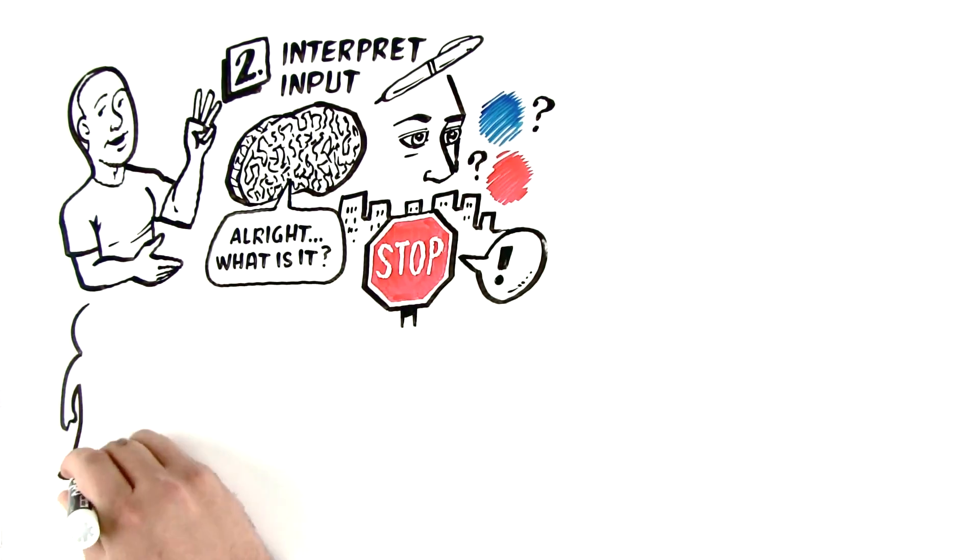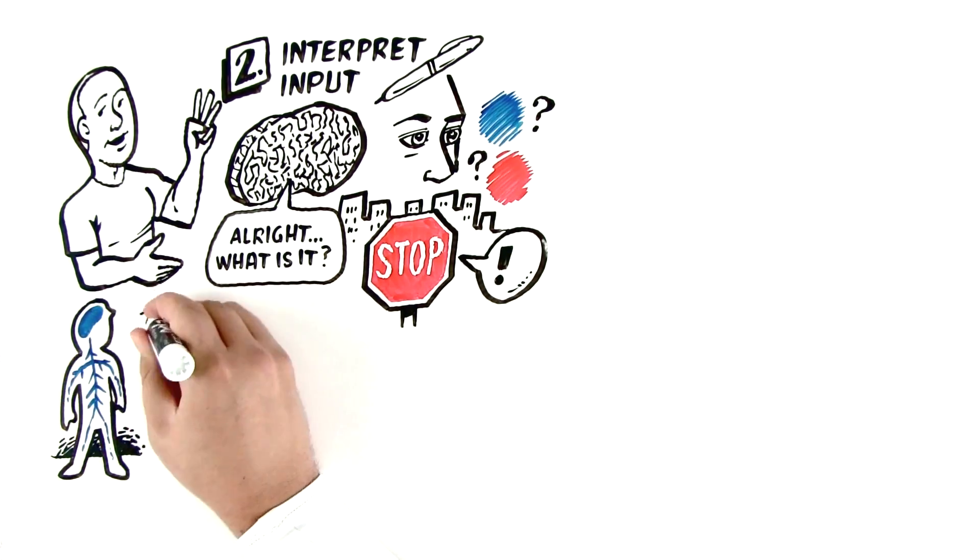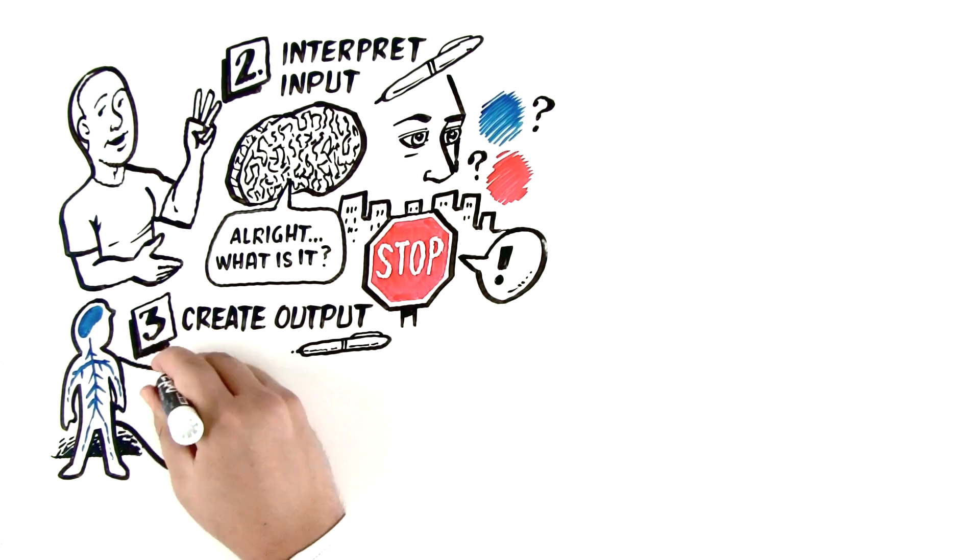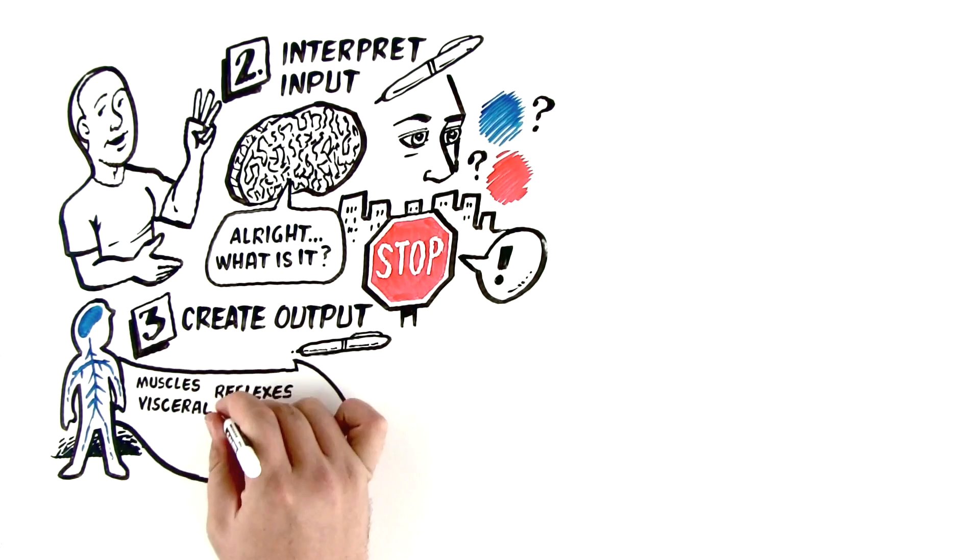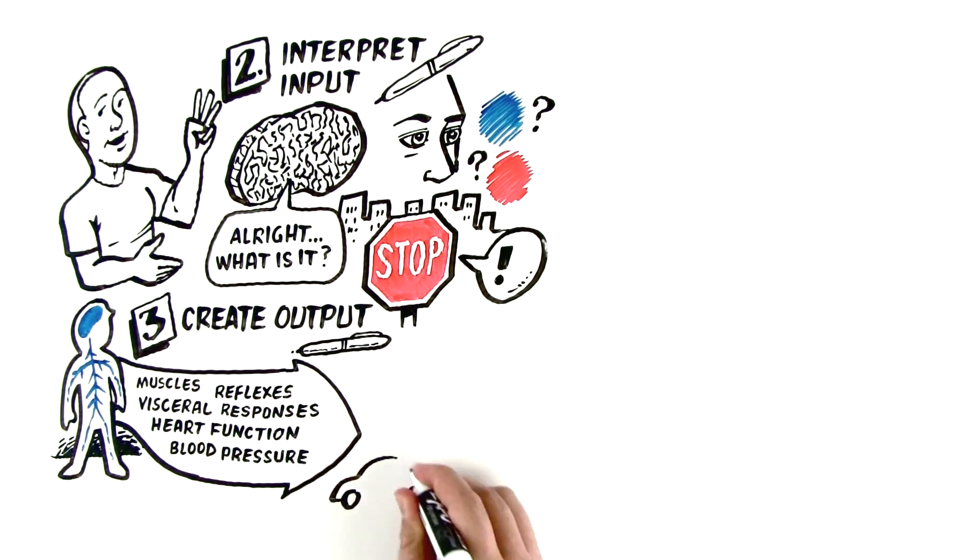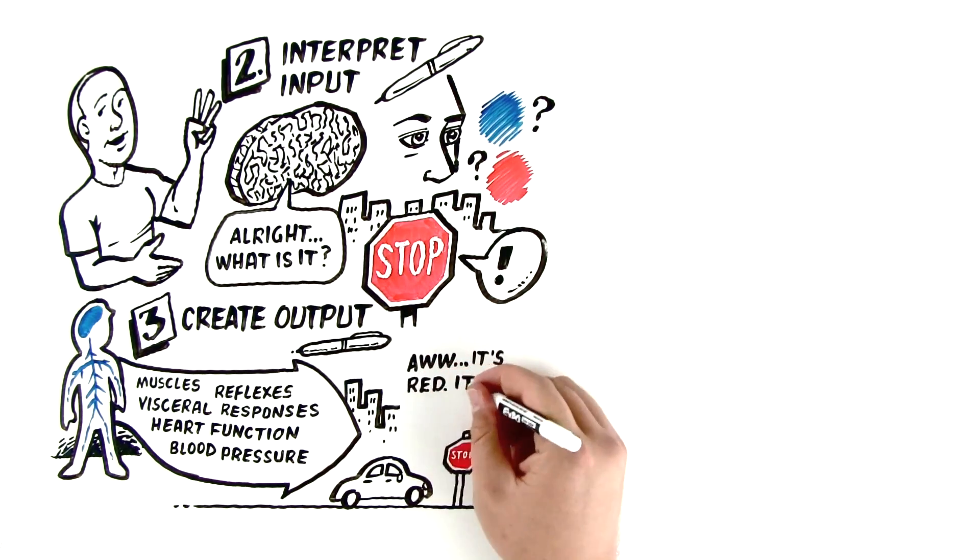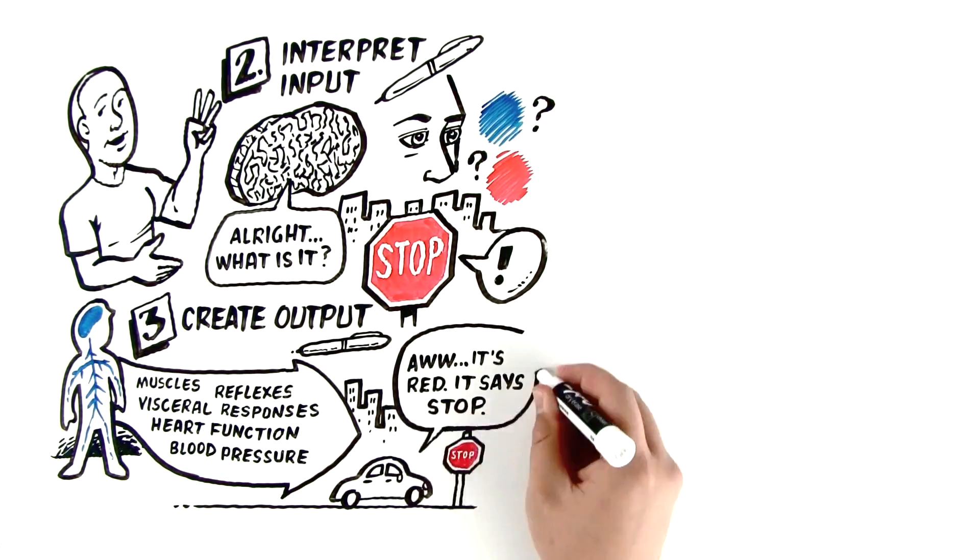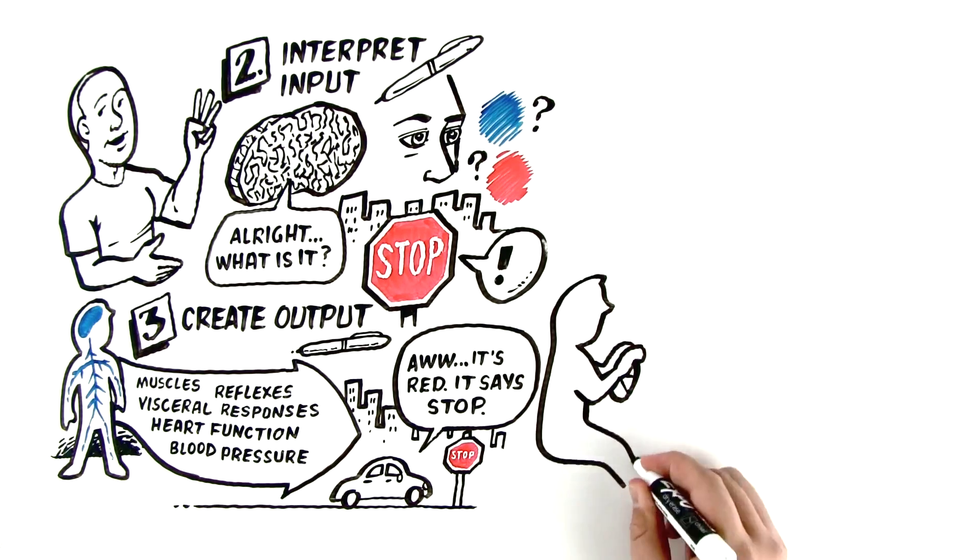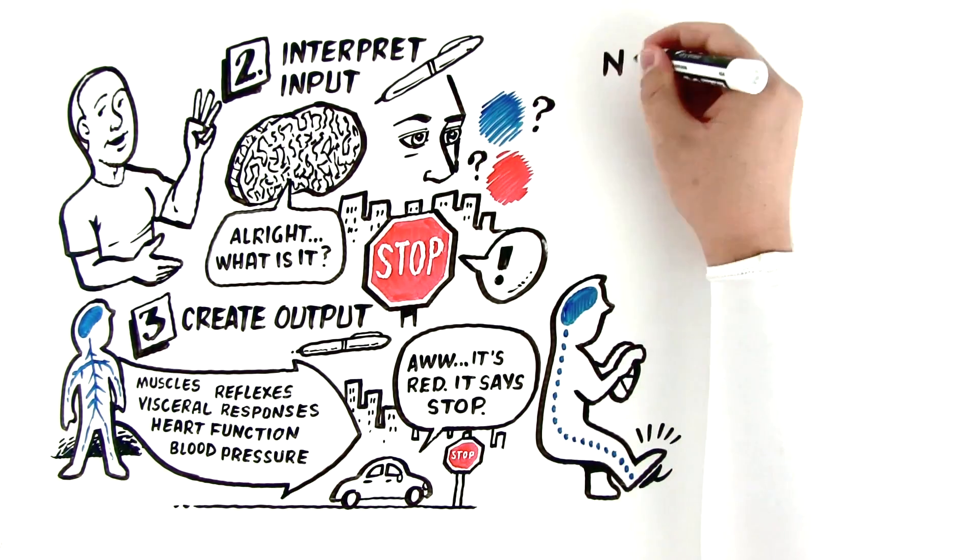So then we go to the third thing that your brain or body, nervous system however you want to think about it, has to do, which is create an output. And an output is all about muscles and reflexes and visceral responses and heart function and blood pressure. So if I'm here and I'm driving along and I see a red sign in front of me and I can interpret that it's red, my brain can go, it's red and it says stop, so that's the decision. It then has to send an output down to your foot so that you can press the brakes.